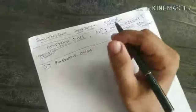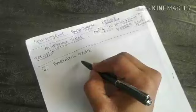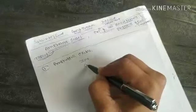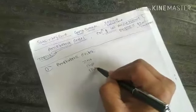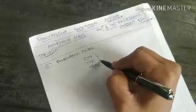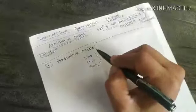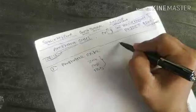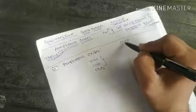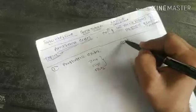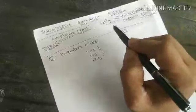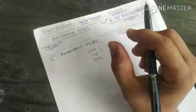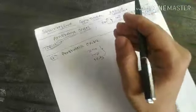Metal oxides like zinc oxide, copper oxide, and iron oxide — all metallic oxides are basic in nature. Remember this: metallic oxide = basic. But there are certain metallic oxides which react with both acid as well as base.